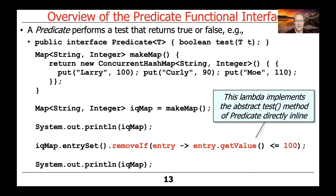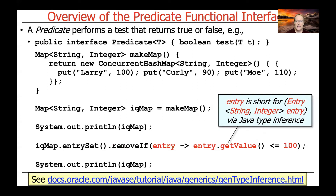What's happening under the hood is that this lambda is going to implement the test method of the predicate directly inline. There's no method here explicitly called test — that's implied because we're using a predicate lambda that matches the signature expected by the predicate functional interface. It takes a parameter and returns true or false. The entry you see is shorthand for the full type Map.Entry<String, Integer>, taking advantage of Java 8's type inference capabilities to deduce the parameter type.